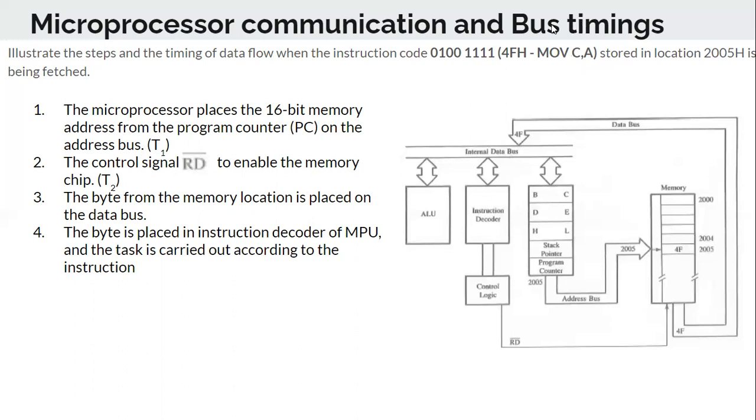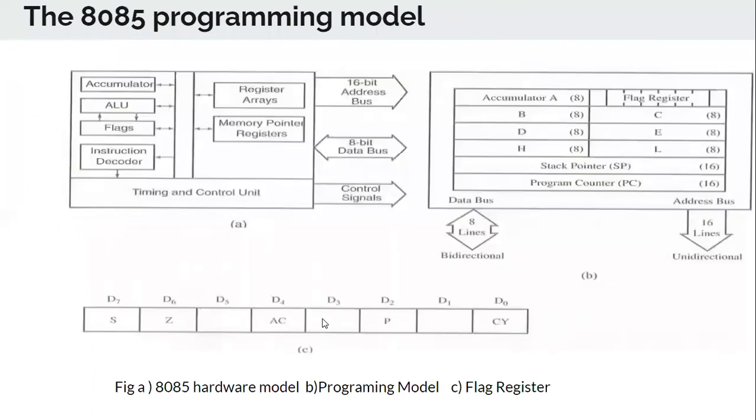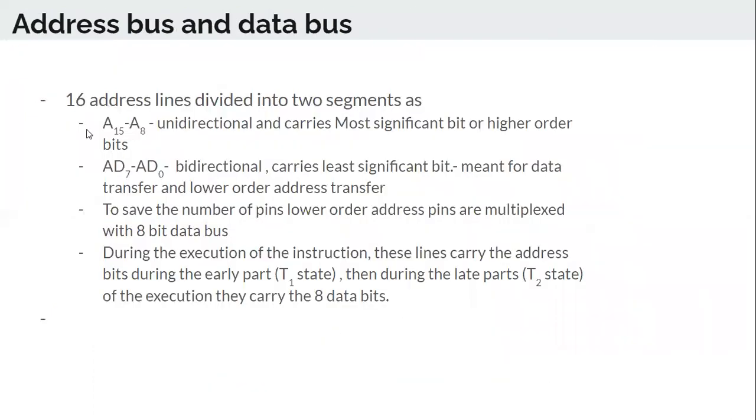Now the instruction decoder will decode this. What is the meaning of this? And then it will execute whatever is said in that. So now the execution means move the content of the accumulator to C register. So all these things will be done in what we call an instruction cycle. So an instruction cycle will consist of fetching of data. Here it fetches the data, keeping it on the data bus and placing it in the instruction decoder, decoding that, and then executing. All these things consist of the instruction cycle, one instruction cycle.